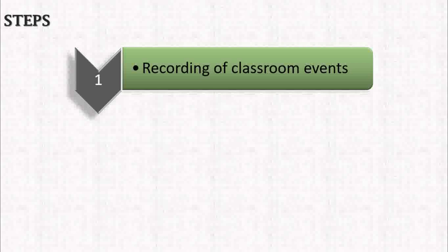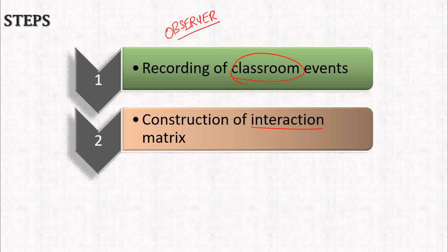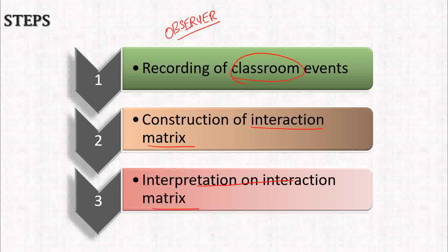Coming to the steps in this Galloway System of Interaction Analysis: the first step is the recording of classroom events. The observer — who must be an experienced person — will record the classroom events. The second step is the construction of the interaction matrix. The third step is the interpretation of the interaction matrix.